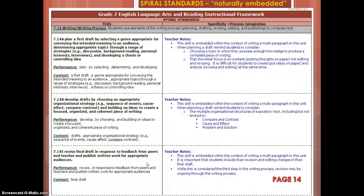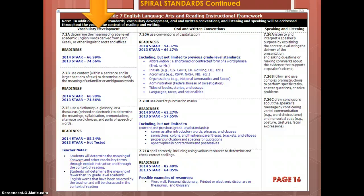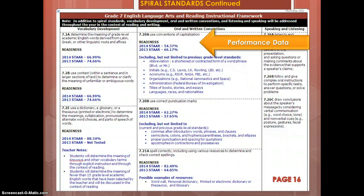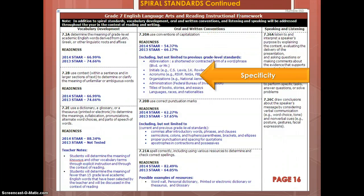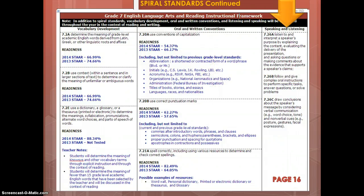After the focus standards, you will see the spiral standards. These are skills to be naturally embedded in the unit — not skills to stop and teach, but skills that should flow and develop with the unit itself. Spiral skills also include vocabulary development, oral and written conventions — for 7th grade specifically we included performance data and specificity because we know this is an area where students are struggling. You'll also see listening and speaking as an embedded component.